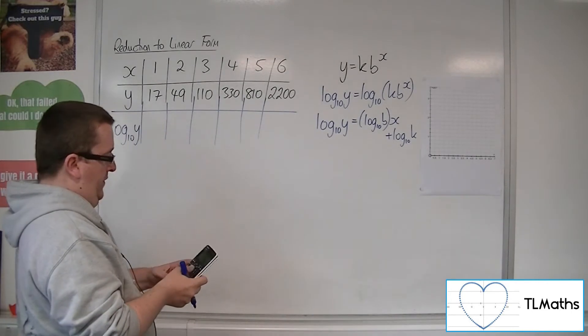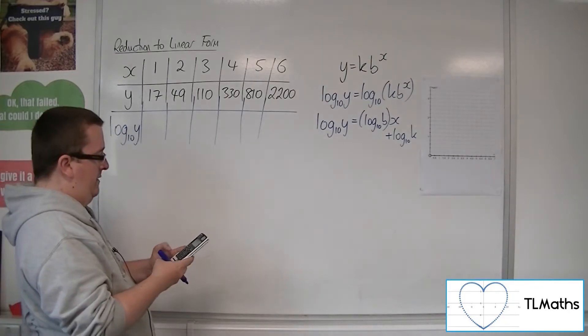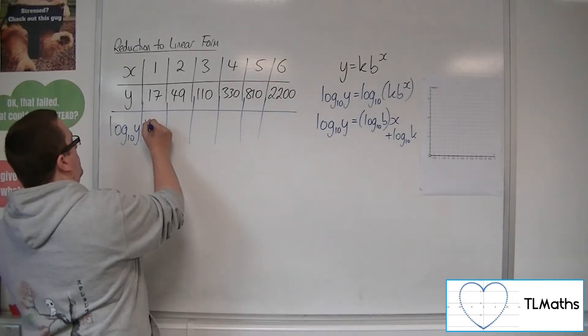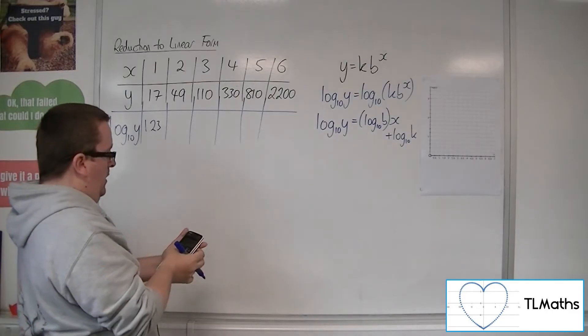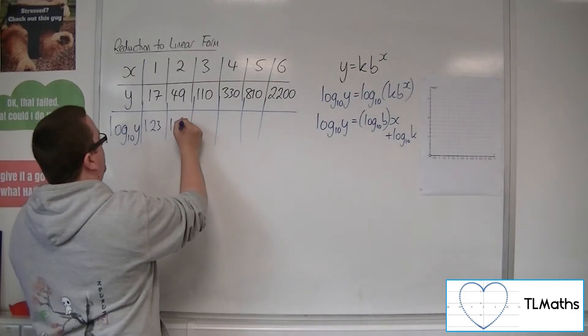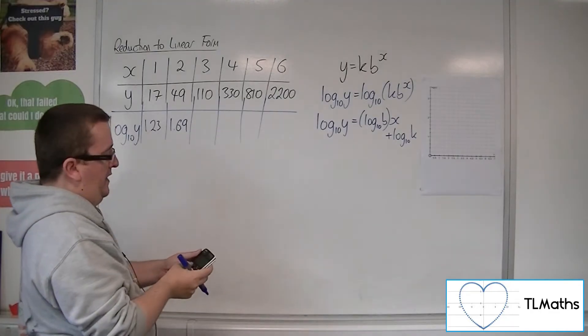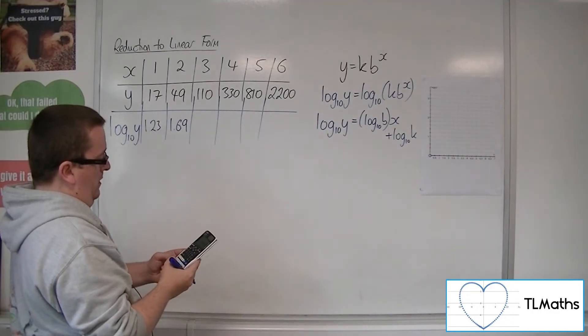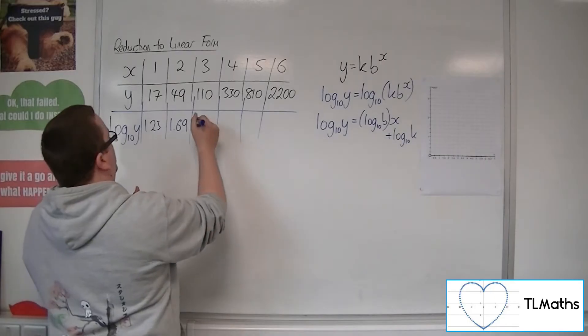So log 10 of 17 is 1.23. Log 10, 49 is 1.69. I'm doing these to 3 sig fig. 110 is 2.04.